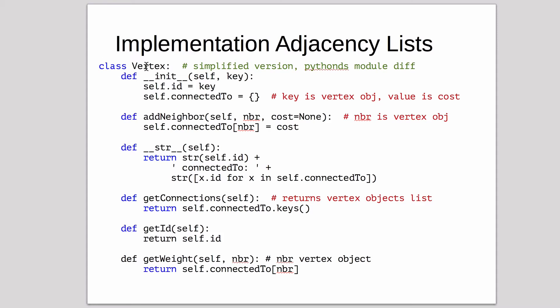We have a vertex class, and it has an attribute for ID and an adjacency list, which is also called the connected to list, which is a dictionary. In this dictionary, the keys will be the actual vertex object, not the ID, and the value is the cost.